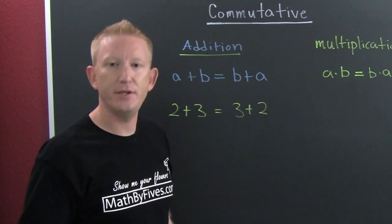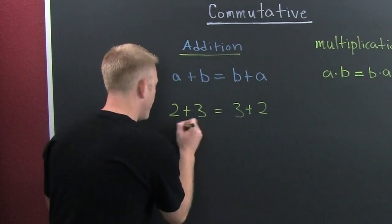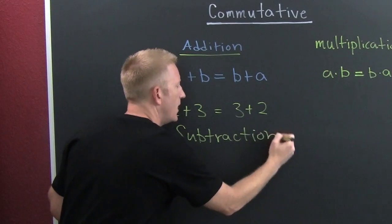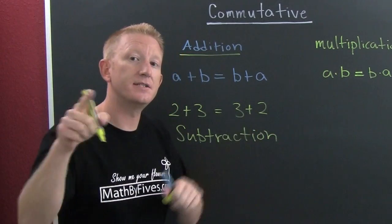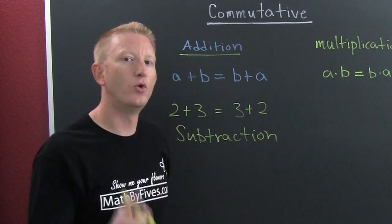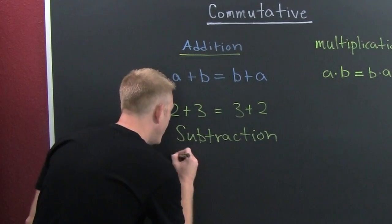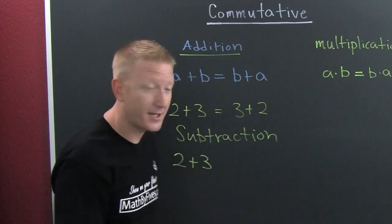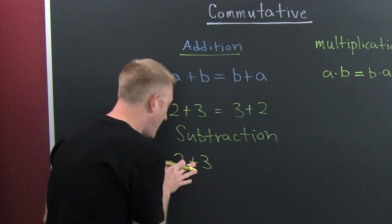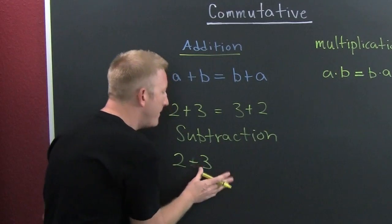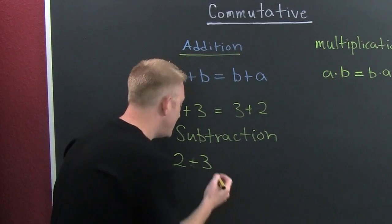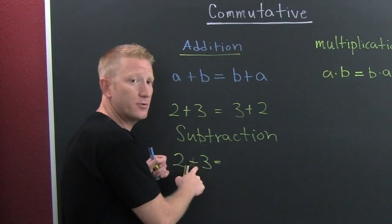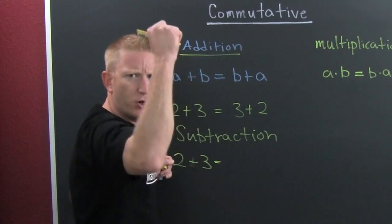Now with the commutative property of addition, you need to beware of subtraction. A lot of books will say that subtraction is not commutative, but wait, there's more. Let's explore signed numbers. If we had two minus three, we could see this is going to be minus one, because if you had two and somebody took three, you're like 'but I only have two,' they're like 'you owe me one,' so then that's going to be minus one.